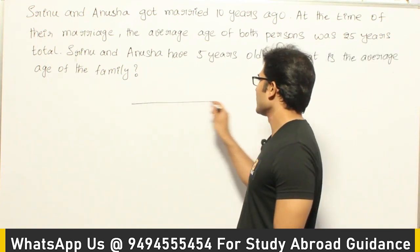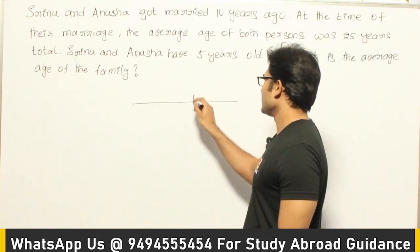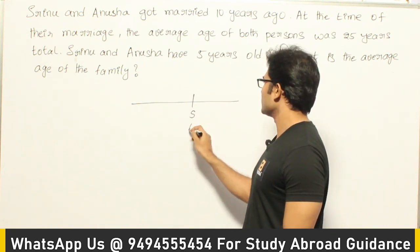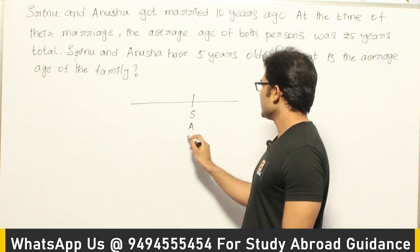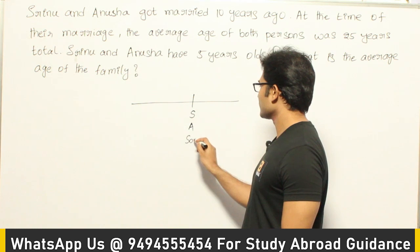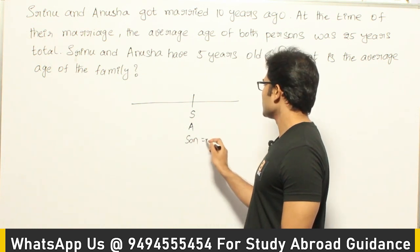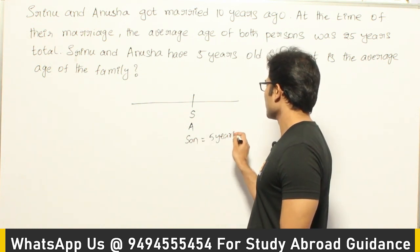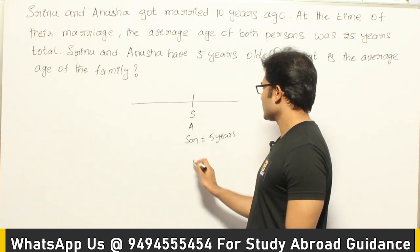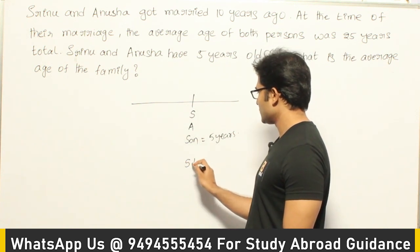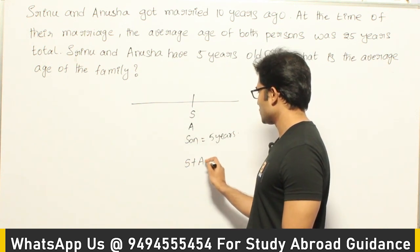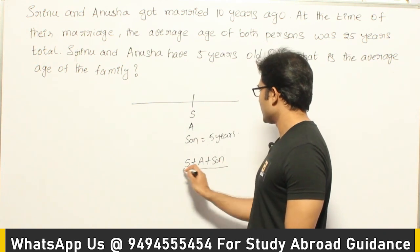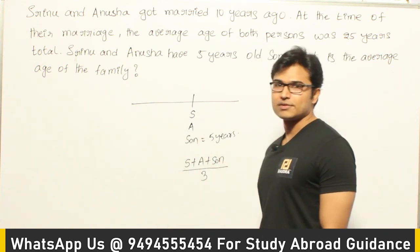In the family at present, there is Srinu, Anusha, and their son. The son's age is given as 5 years. We need to find Srinu's age plus Anusha's age plus son's age, divided by 3.